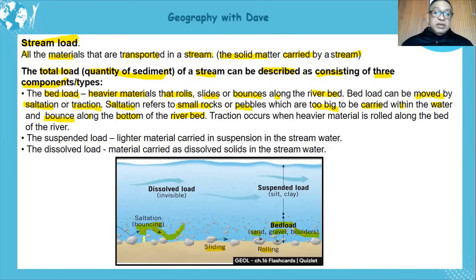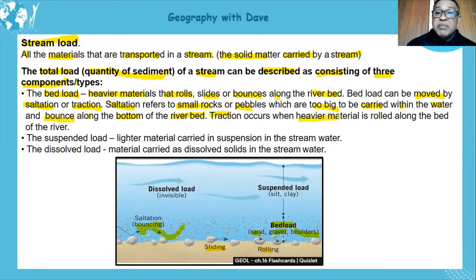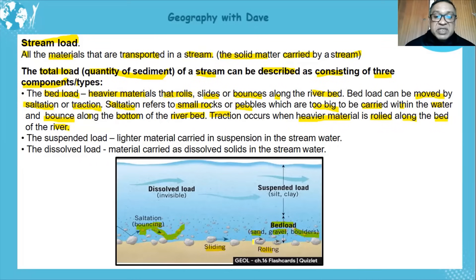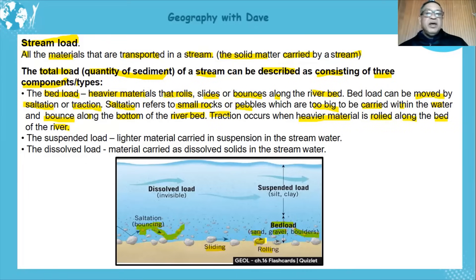The second process is traction. Traction occurs when heavier material cannot even be bounced. As the water flows, this material is rolled along the bed of the river. You can see it being rolled along the bed — that is traction.